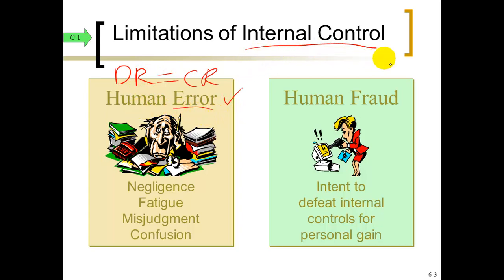Internal control can also be used to prevent crimes: fraud, embezzlement, theft, and misleading financial statements. That's probably the biggest thing. If you want to steal money, you don't use a gun. You learn how to use creative accounting to hide mistakes and make yourself look better than you really are — showing more assets than you own, or that you're more profitable than you really are.